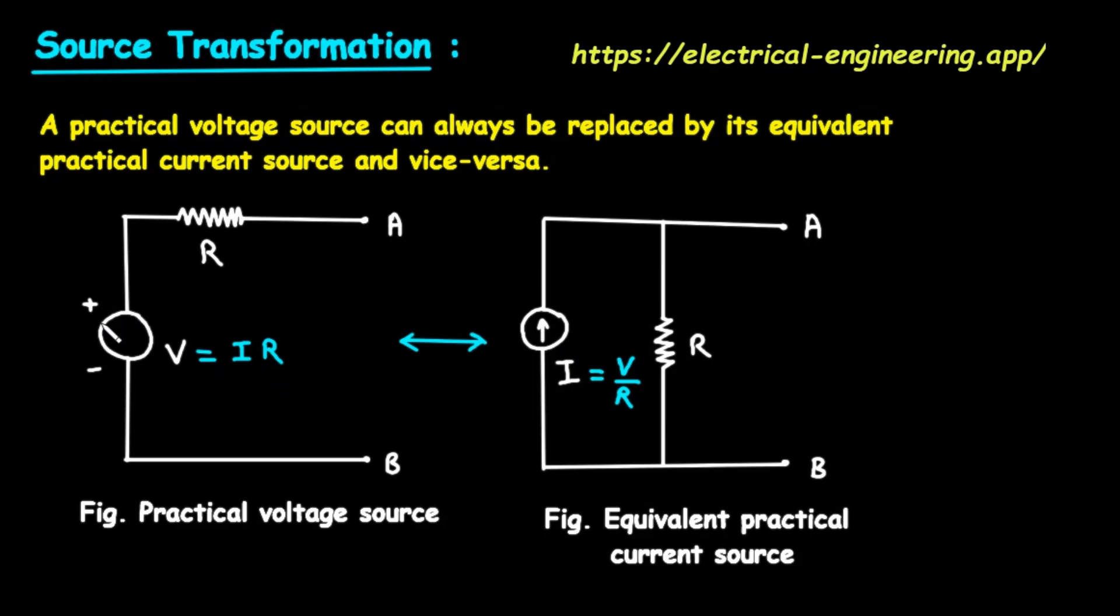Step 3, the polarity of the voltage. This is the reverse of the rule we just learned. Look at the original current source. The arrow points up, towards terminal A. The rule is, the positive terminal, the plus sign, of the new voltage source must be placed on the side the arrow is pointing to. Since the arrow points up, the plus sign of our new voltage source goes at the top, and the minus sign goes at the bottom. And that's the entire process.